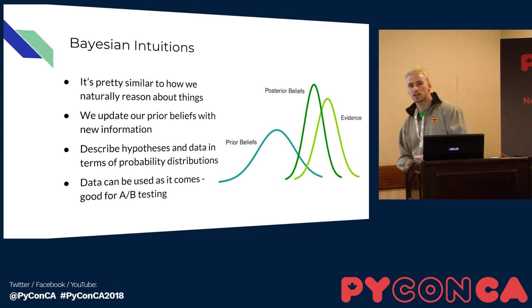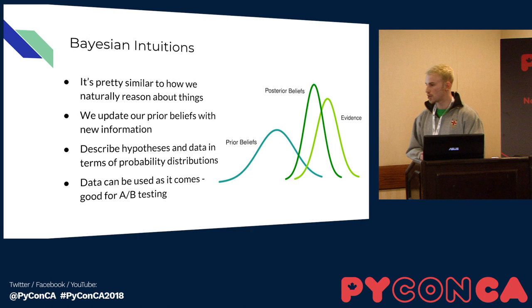The Bayesian approach is great for A/B testing because you can use data as it comes in and keep continually updating our prior beliefs with new information, and there's no limit or restrictions to the sample sizes for both our A and B groups — we can use as much data as we have.